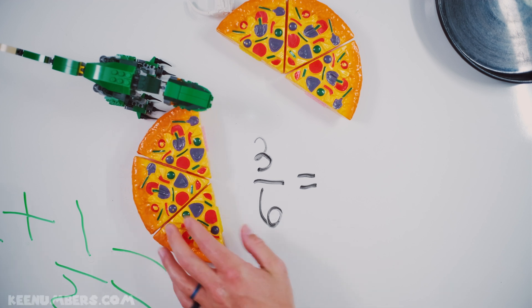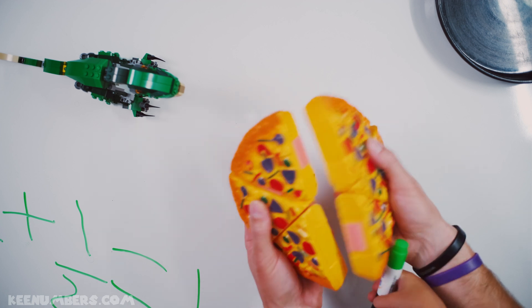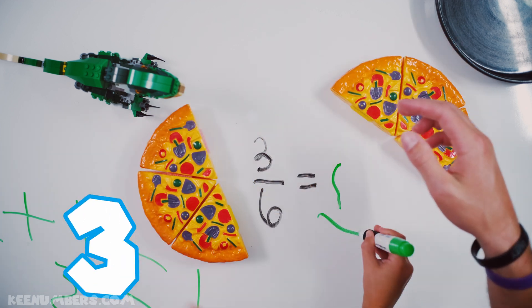We have three-sixths of a pizza slice. Why do I know it's three-sixths? Because, look, we have six slices of pizza. And one, two, three gives us three-sixths.